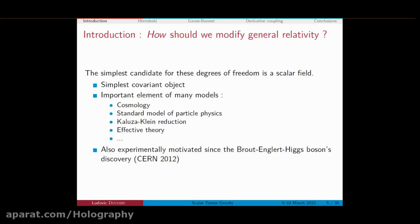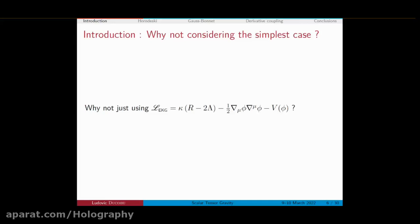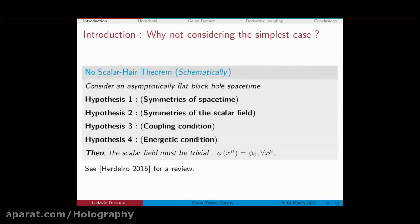If you follow that path and try to add a scalar field on top of general relativity, maybe the last question for this introduction is: why study what I'm going to present, namely Horndeski gravity? Why don't we just stick to the Einstein-Hilbert Lagrangian plus a scalar field with possibly some potential? Well, if you are interested in black hole physics, one possible way to motivate this is to look at the so-called No-Hair Theorems.